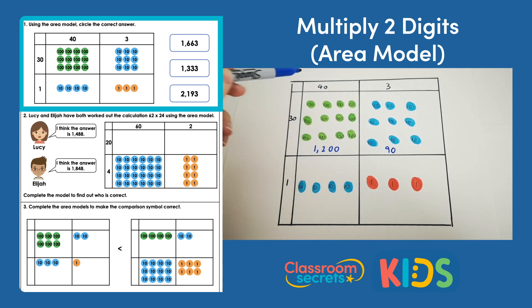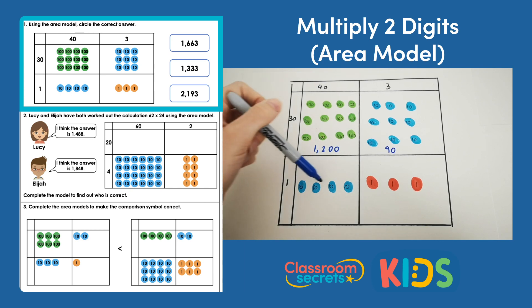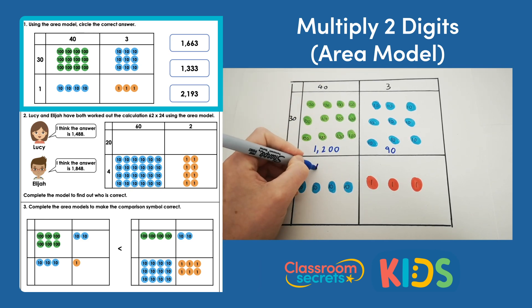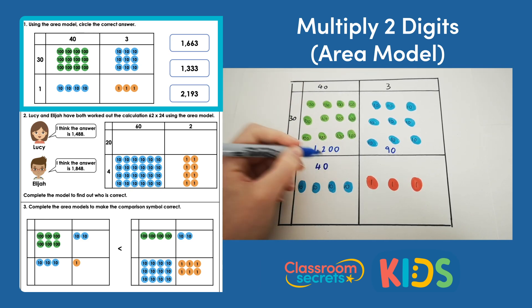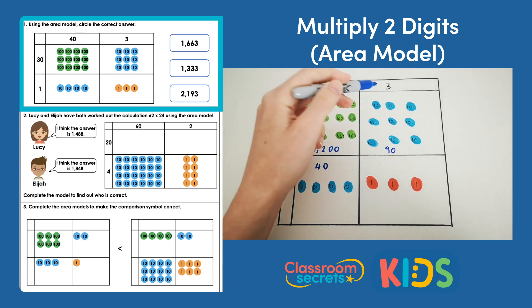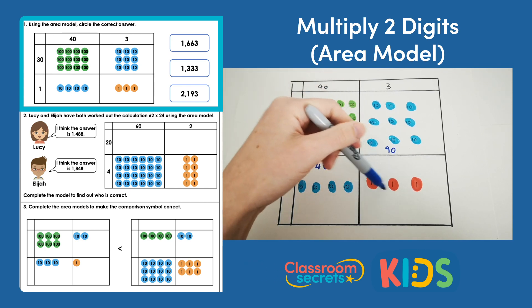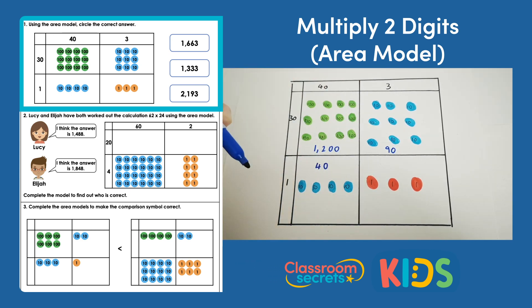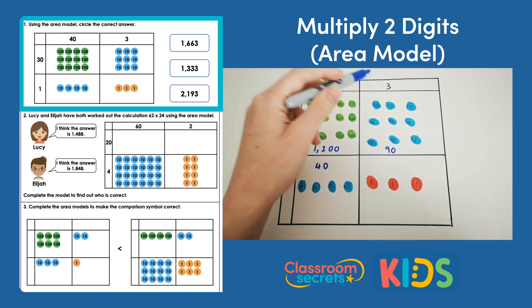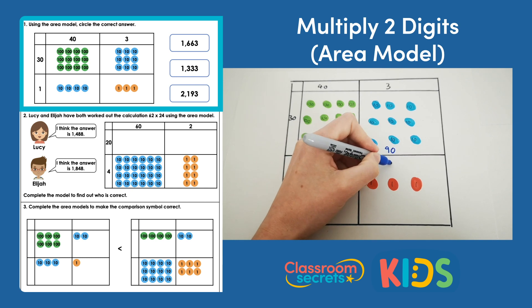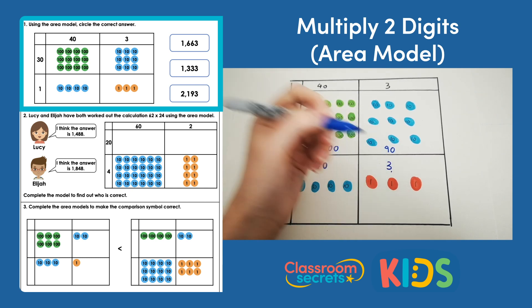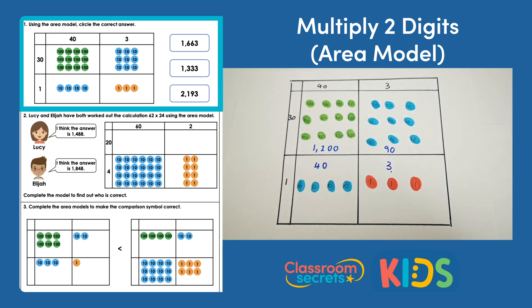In this box we should have 40 times 1, which would give us 4 tens, and it does. Then in this box we do the calculation 3 times 1. So 3 times 1 is 3 and there are 3 counters, so that's correct. This model is done for us completely — we don't need to add anything to it.